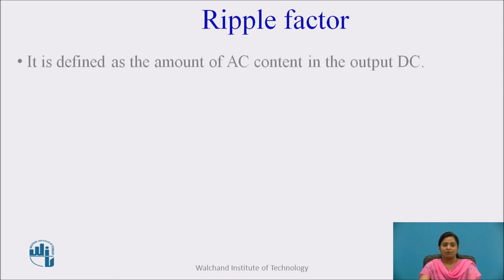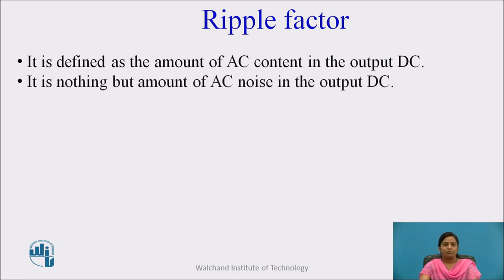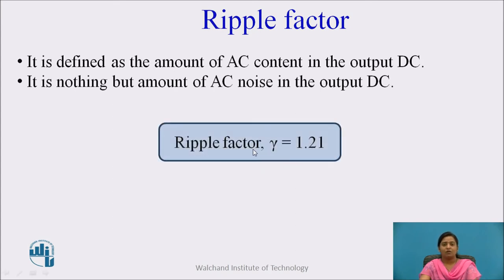Next is the ripple factor. It is defined as the amount of AC content in the output DC — the amount of AC noise in the output DC. The ripple factor for a half wave rectifier is equal to 1.21. A low ripple factor for a rectifier indicates its high performance.